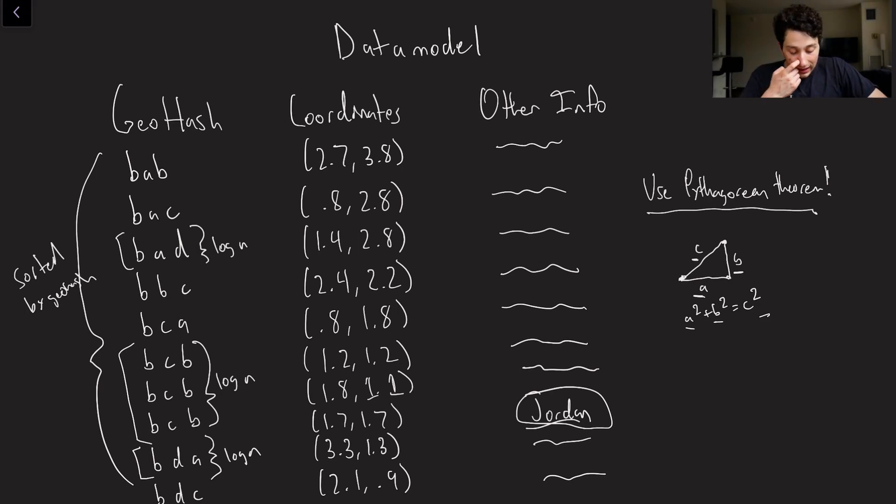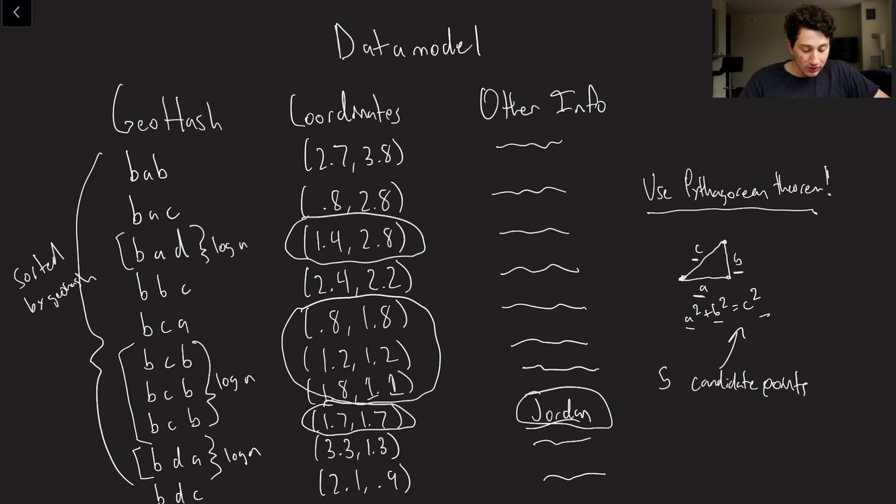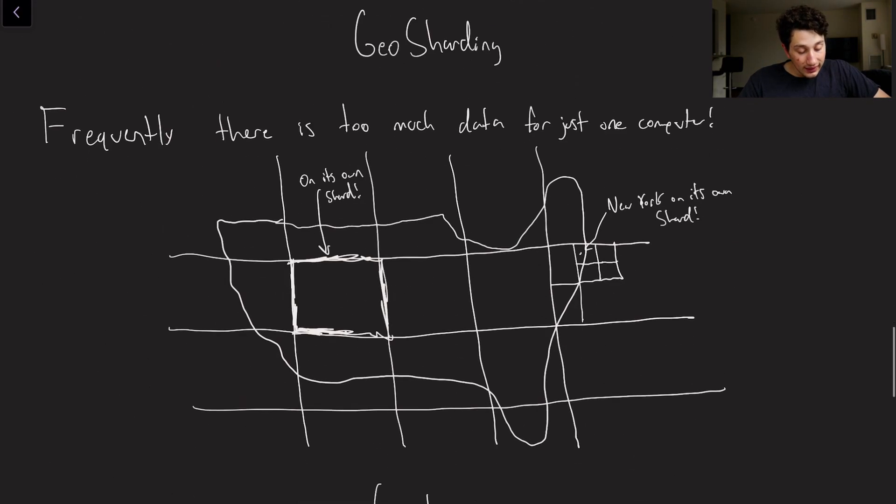And then once we have them, we now have like five possible candidate points. And then what do we do? We use the Pythagorean theorem to actually determine whether they're in one mile of 1.7, 1.7. So I would be looking at this column once I find them in the actual geohash area.